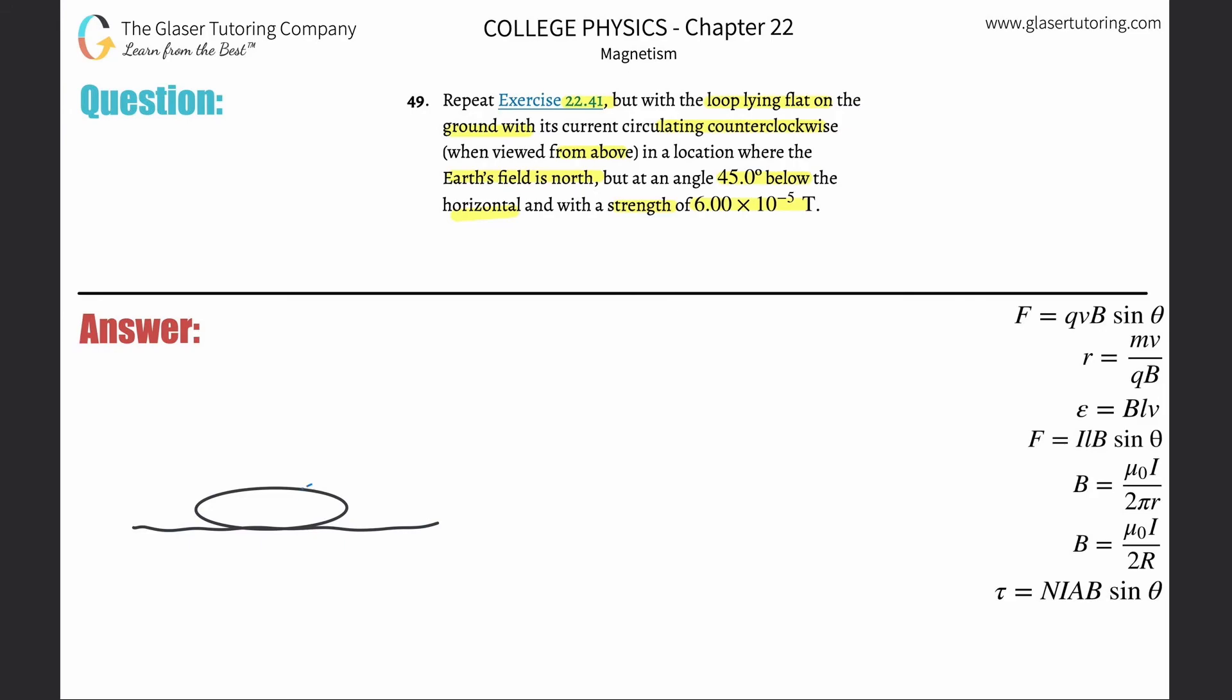Now if we're looking at it from the top, pretend you're floating above it and you're viewing this downward. It says that the current is circulating counterclockwise, so from your perspective the current should be going this way.